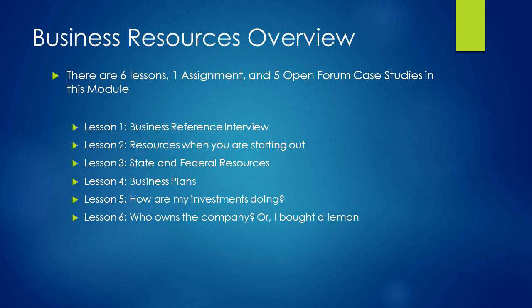In lesson four, we will be learning about what a business plan is and how librarians can help entrepreneurs track down information for their own plans. In the assignment, we will be using American Fact Finder to track down the number of households in your branch's zip code, and you will be helping Dylan find local competitors for his vape shop. In lesson five, we'll be learning about sources of investment information and helping Mr. Kim research Apple stocks in the case study. Finally, in lesson six, we will be finding information about company officers and also learning about how to help customers if they have a business complaint. Then we'll be helping Mrs. Jones with her problem in the case study.